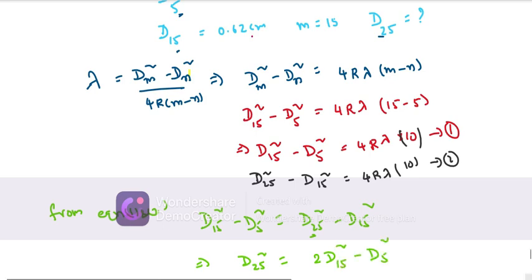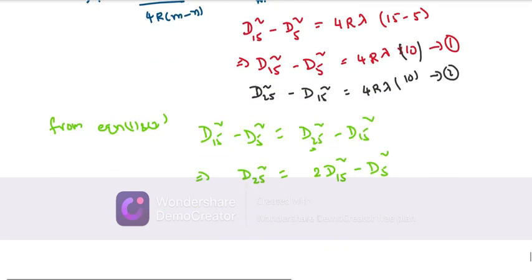Substituting the values for the 25th ring diameter: D₂₅² = 2(0.62)² - (0.30)².